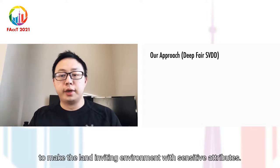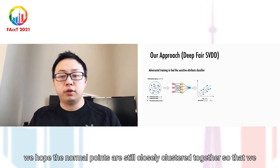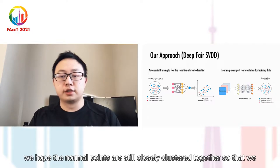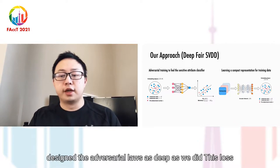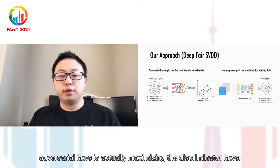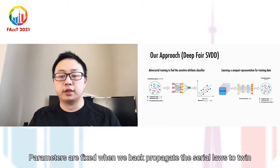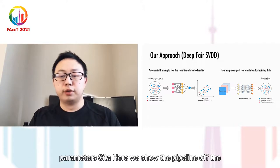To make the learned embeddings invariant with sensitive attribute Z, we hope to tune the embedding function F to fool the discriminator G. Meanwhile, we hope the normal points are still closely clustered together, so we design the adversarial loss as deep SVDD's loss subtracting the discriminator's loss. Minimizing the adversarial loss is actually maximizing the discriminator's loss. Note that the discriminator's parameters are fixed when we backpropagate the adversarial loss to train parameter theta.